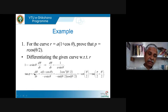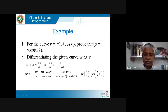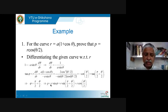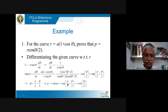I know tanφ = r·dθ/dr, where r = a(1 + cosθ). So tanφ = a(1 + cosθ) divided by (−a·sinθ), which gives tanφ = −(1 + cosθ)/sinθ. Rewriting in elementary trigonometry, tanφ = tan(π/2 + θ/2), so φ = π/2 + θ/2. Therefore p = r·sinφ = r·sin(π/2 + θ/2) = r·cos(θ/2). That is what we wanted to prove.